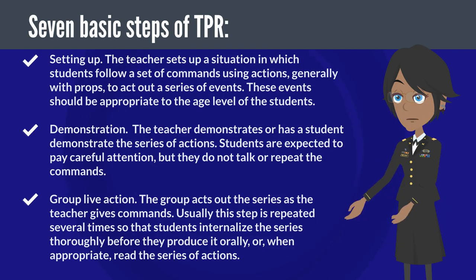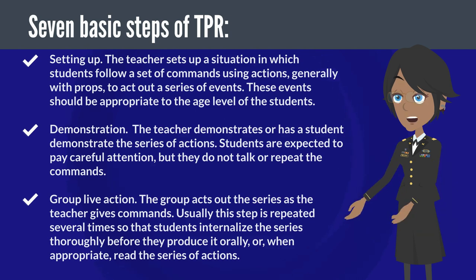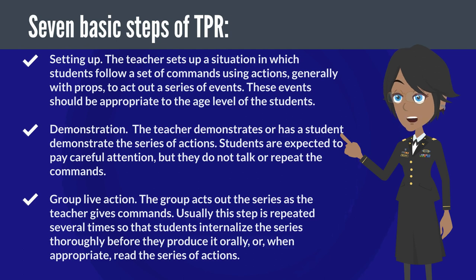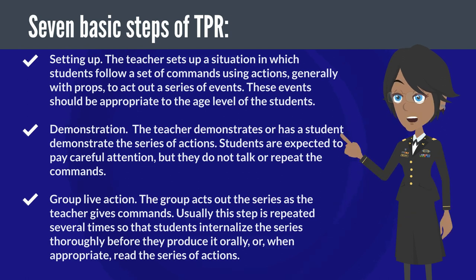7 Basic Steps of TPR. Step 1 — Setting Up: The teacher sets up a situation in which students follow a set of commands using actions, generally with props, to act out a series of events. These events should be appropriate to the age level of the students.